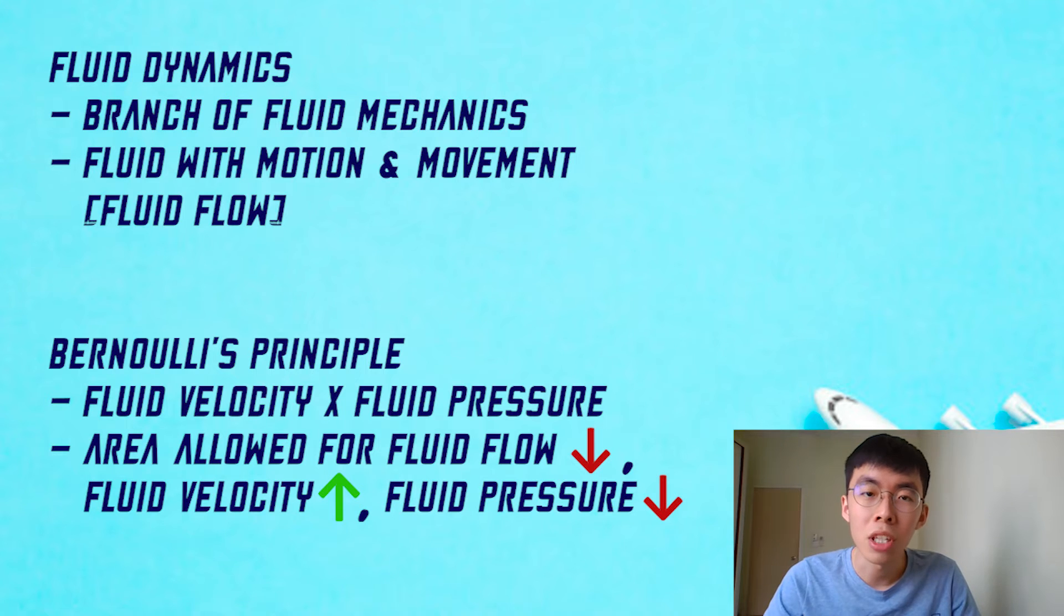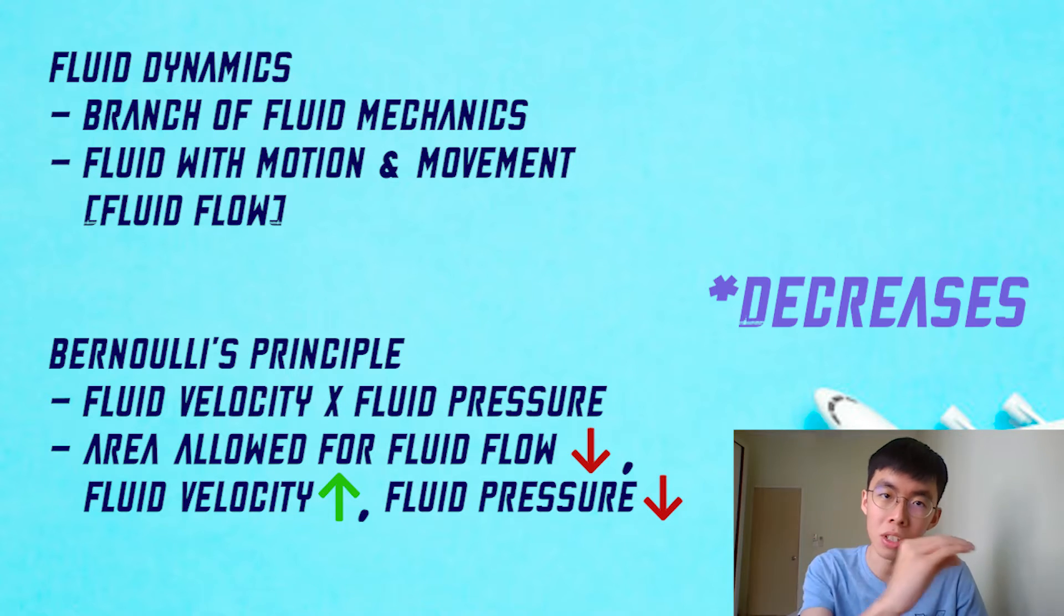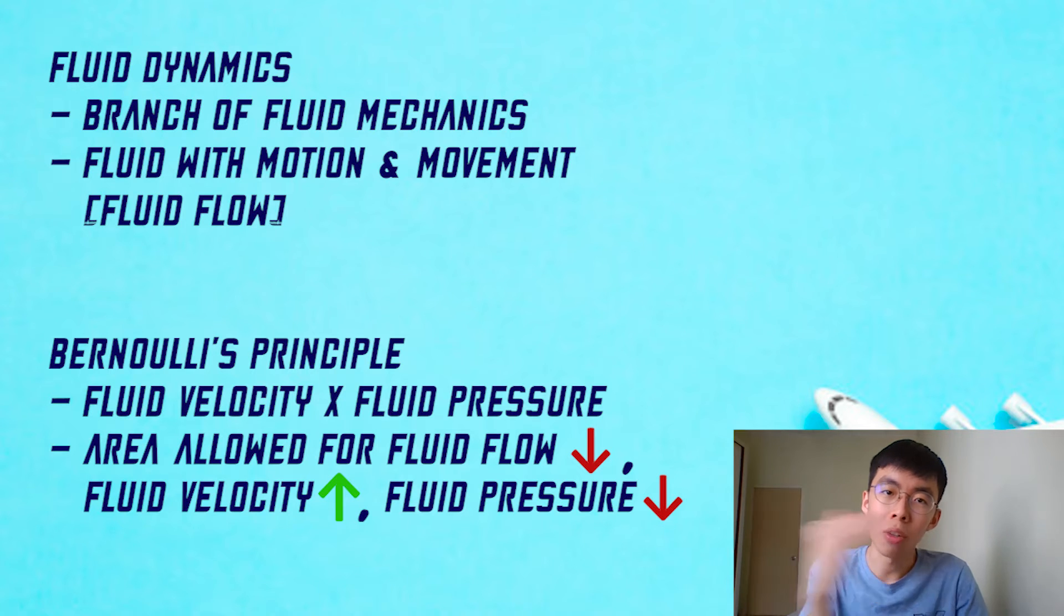The principle displays the relationship between fluid velocity and fluid pressure and states that when the area for fluid flow decreases, the fluid velocity increases while the fluid pressure decreases.